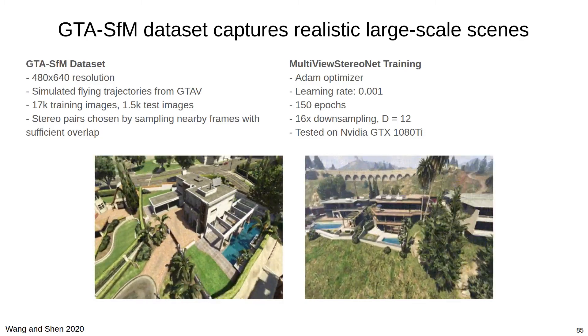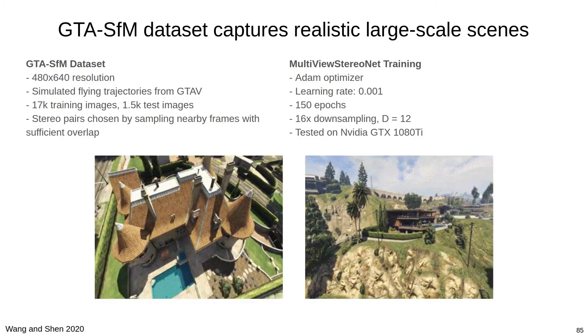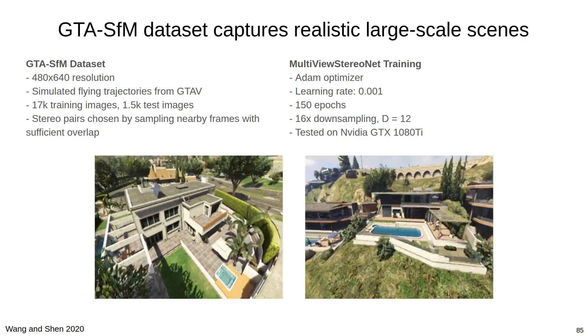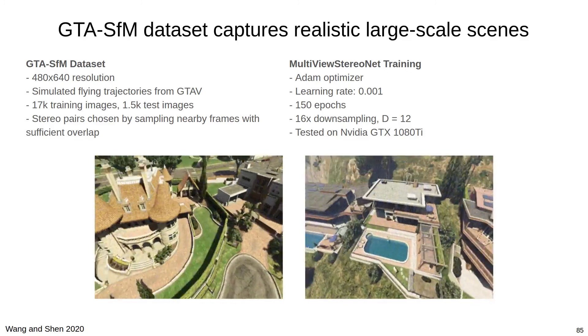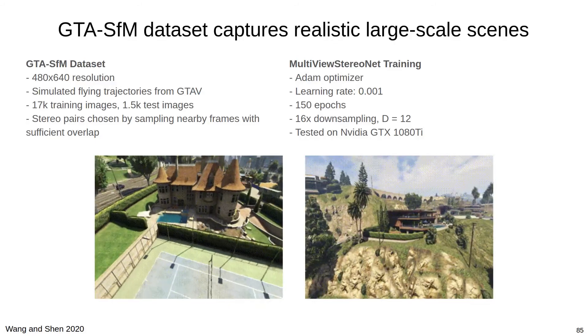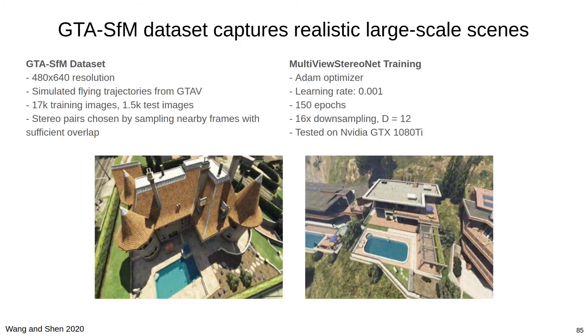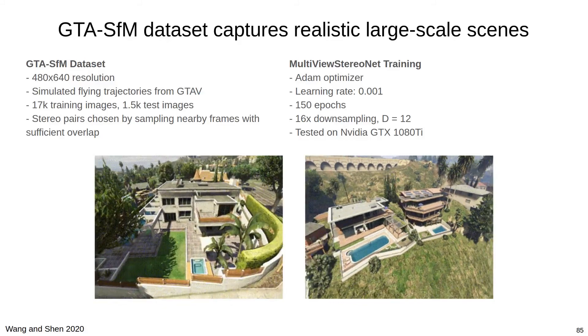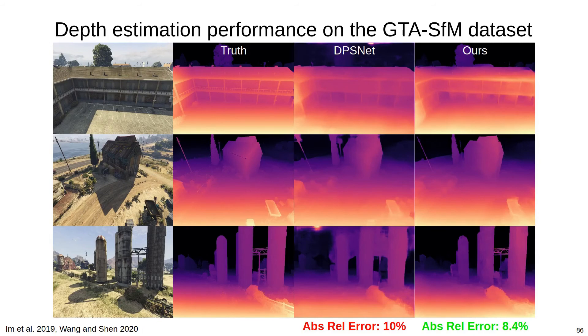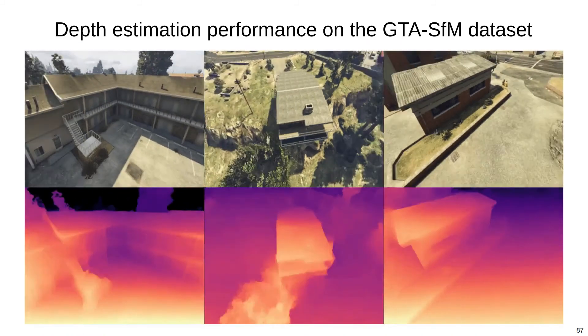We also show impressive performance on the GTA SFM dataset when compared to DPSNet. The GTA SFM dataset is a simulated benchmark from the GTA V video game with a wide variety of realistic large-scale environments and camera trajectories. There are roughly 17,000 training images and 1,500 test images. Here we show some examples of depth maps from the dataset, where we perform well compared to DPSNet. DPSNet achieves an absolute relative depth error of 10% on the test set, while we achieve an error of about 8.4%, again, while being order of magnitude faster. And here are some more qualitative results from the dataset.